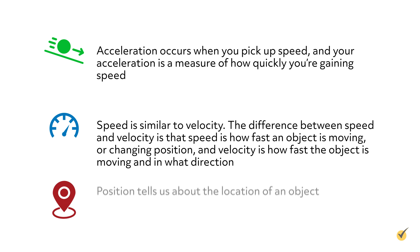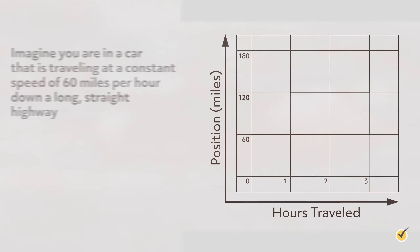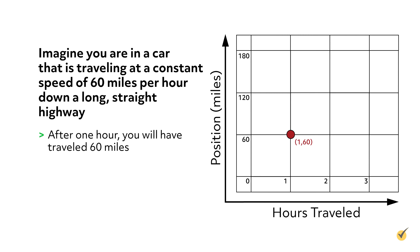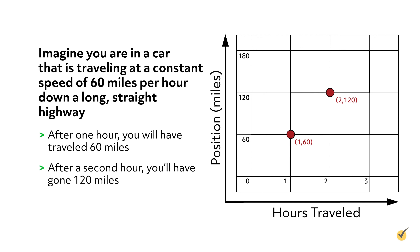Speed is a similar word to velocity. The difference between speed and velocity is that speed is how fast an object is moving or changing position, and velocity is how fast that object is moving and in what direction. Position tells us the location of an object. In this video we are going to talk about how acceleration, velocity, and position are all related to each other, as well as some applications of this knowledge that help scientists in the real world.